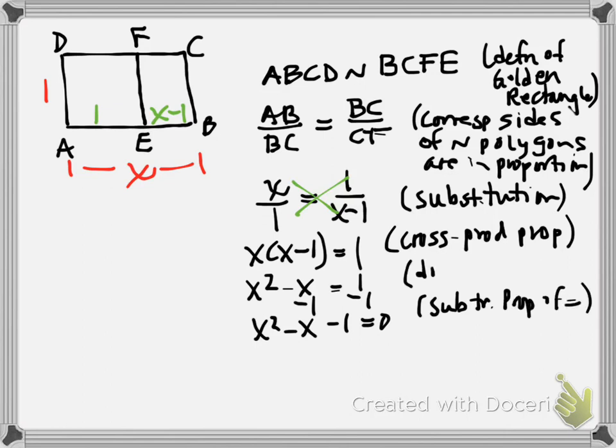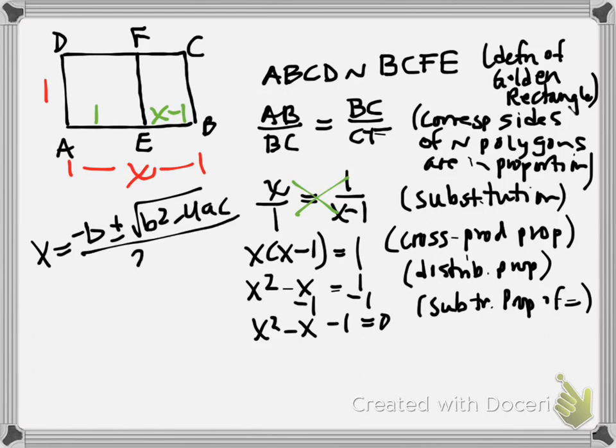There aren't factors of negative 1 that add to give me negative 1. So what is my only option? Quadratic formula. We can't factor this one. So we're going to use quadratic formula. Can you guys sing the song for me? X equals negative B plus or minus square root B squared minus 4AC all over 2A. So what we're going to do is identify A, B, and C, plug them in and see what we get. A is the coefficient of the squared term, B is the coefficient of the linear term, C is the constant.